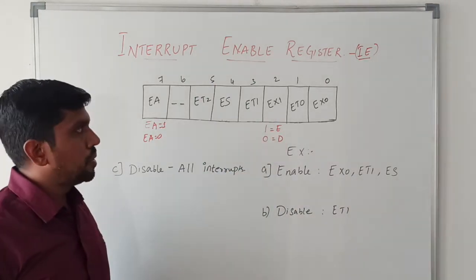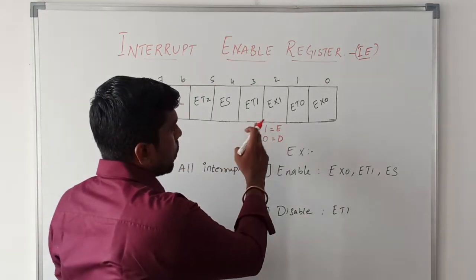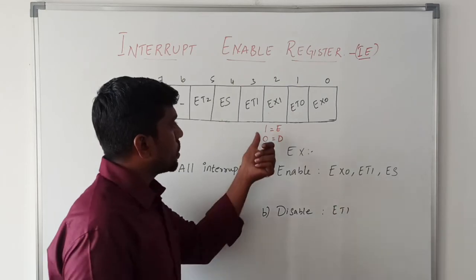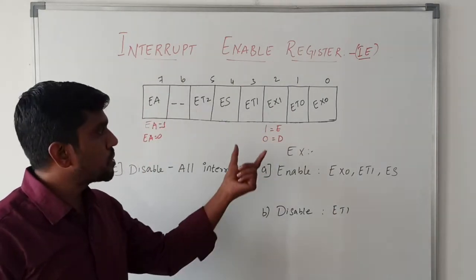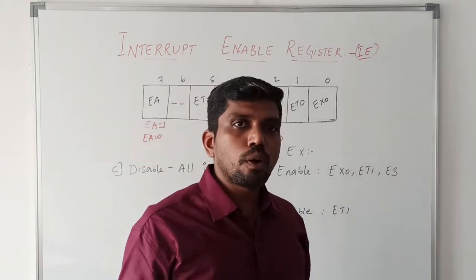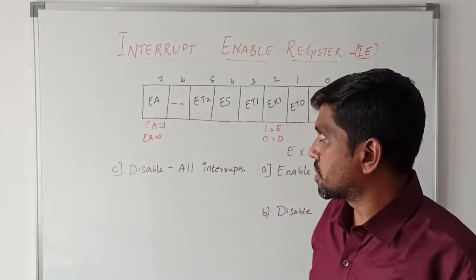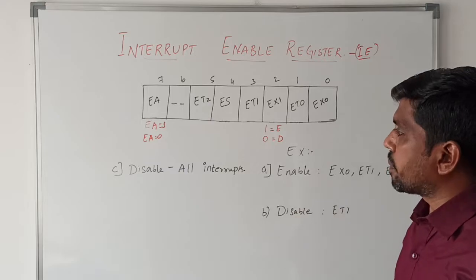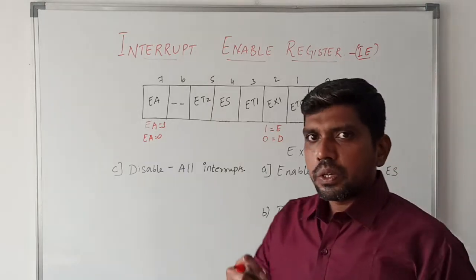Likewise you set or reset based on one or zero. Based on this value, the microcontroller recognizes to enable or disable the interrupts. This is the basic operation of how you enable or disable the interrupts using instructions.